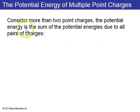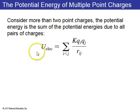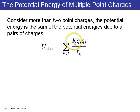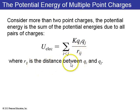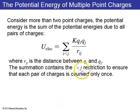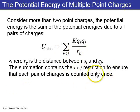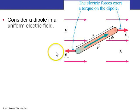Second, if there are more than two point charges, the potential energy of the system is found by summing over all pairs: the sum for i less than j of k times q_i times q_j divided by r_ij, where r_ij is the distance between any two particles. The condition i less than j ensures each pair is counted only once.